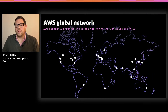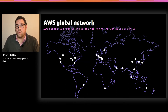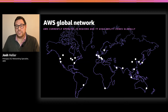AWS operates the largest global infrastructure footprint of any cloud provider, and we're continually expanding that footprint to help customers deliver better end user experience, expand their global reach, and meet various regulatory requirements. Currently, our network is made up of 24 regions across the globe. Each region is made up of at least two availability zones, and usually more. In addition to regions and AZs, our global network also includes more than 210 edge locations, AWS Local Zones, and AWS Wavelength Zones.